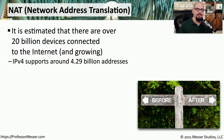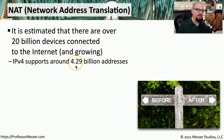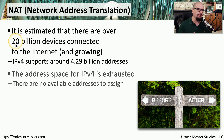On the internet, it's estimated there are over 20 billion different devices that are communicating, and we are increasing the number of devices all the time. But IPv4 only supports 4.29 billion addresses, and we're certainly well over that particular number. The IP address space for IPv4 is also exhausted — if you wanted to get a new IPv4 address that was public and on the internet, you would not be able to easily obtain one.